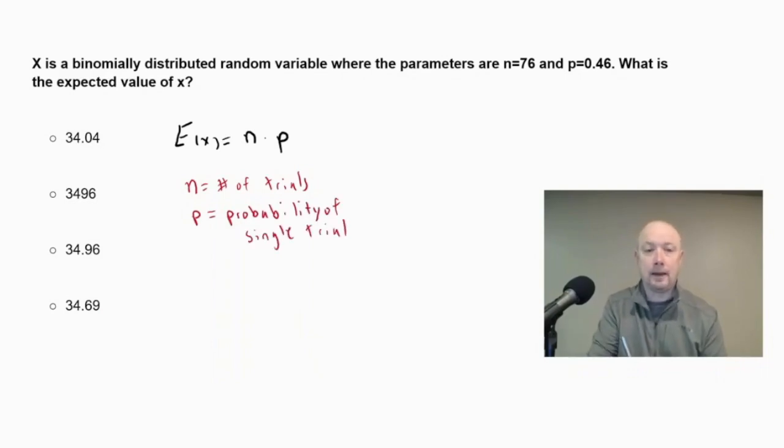So again, we're going to have access to the online graphing calculator. So to get our expected value, we take our n, which is 76. We multiply it by p, the probability of a single trial, so times 0.46. And if we do that correctly, we'll get 34.96 as our answer.